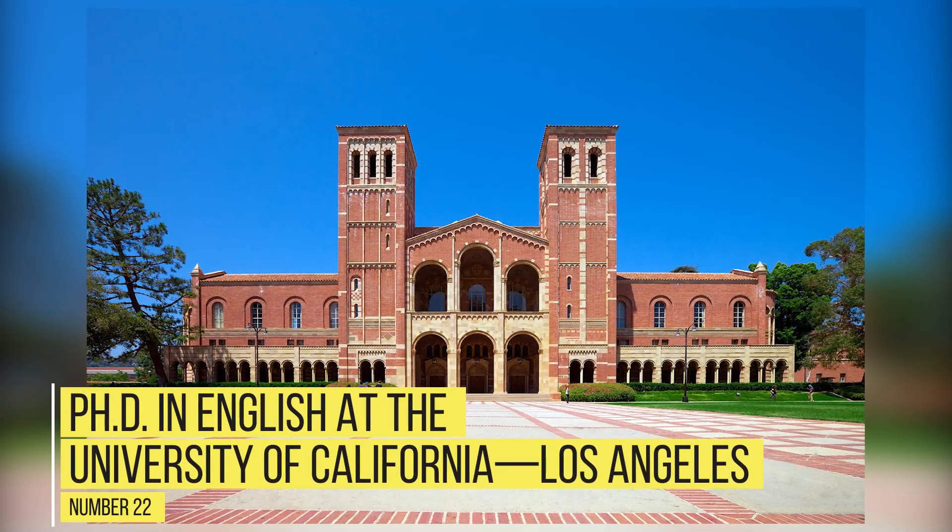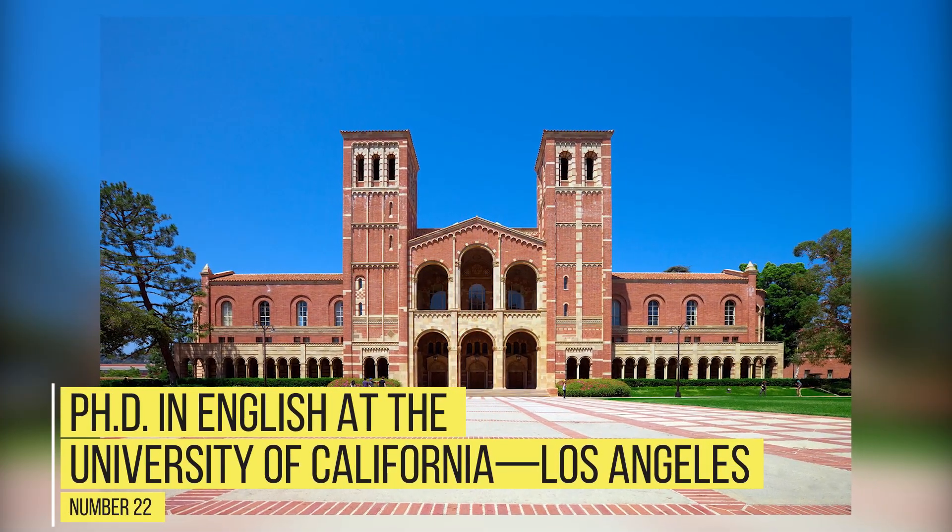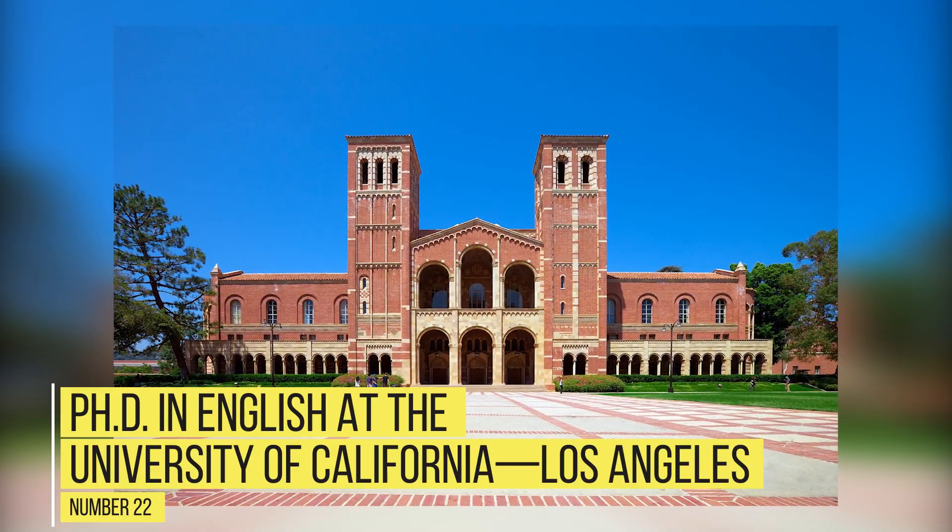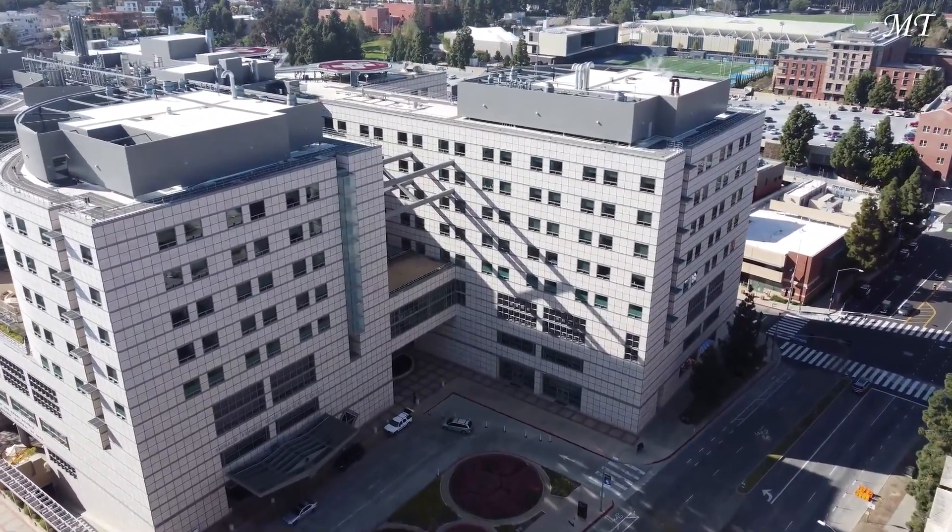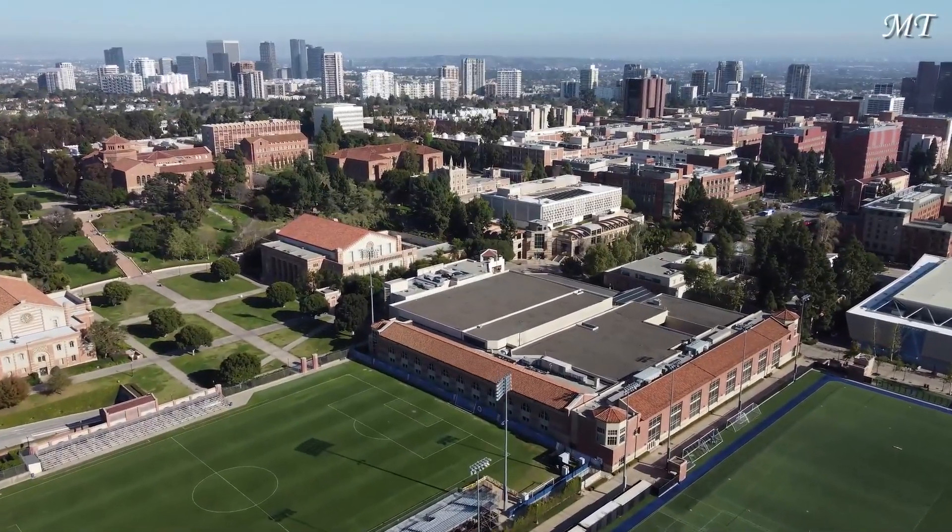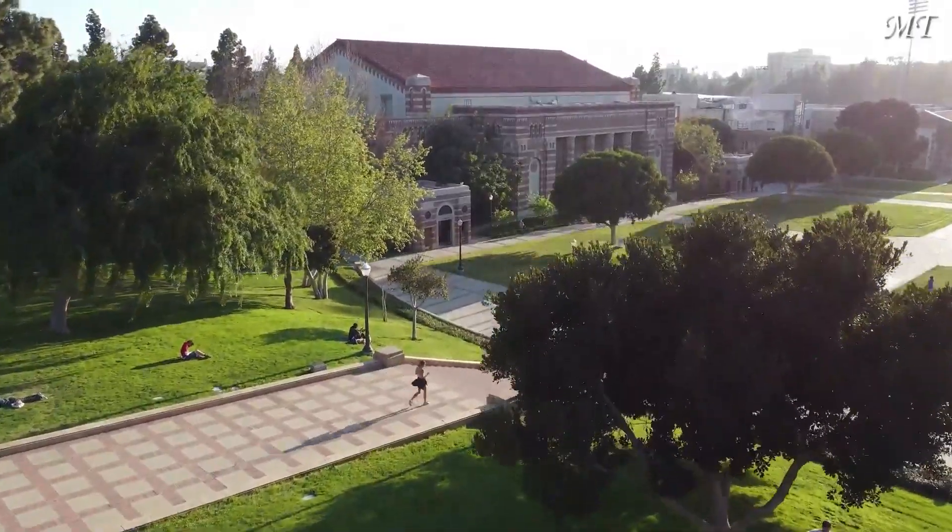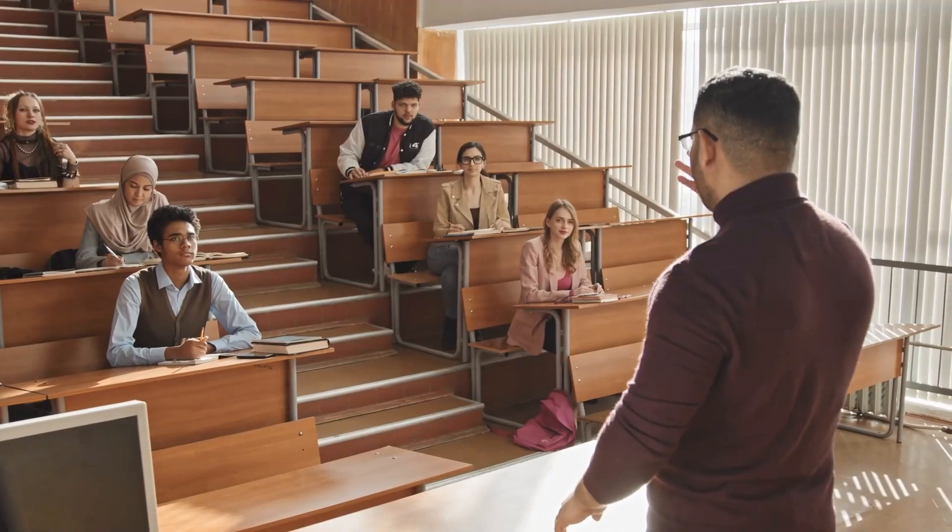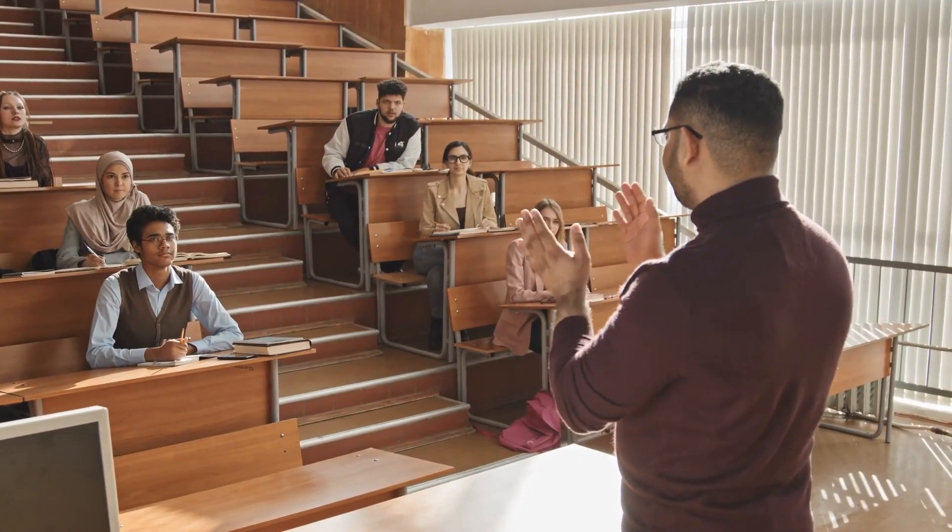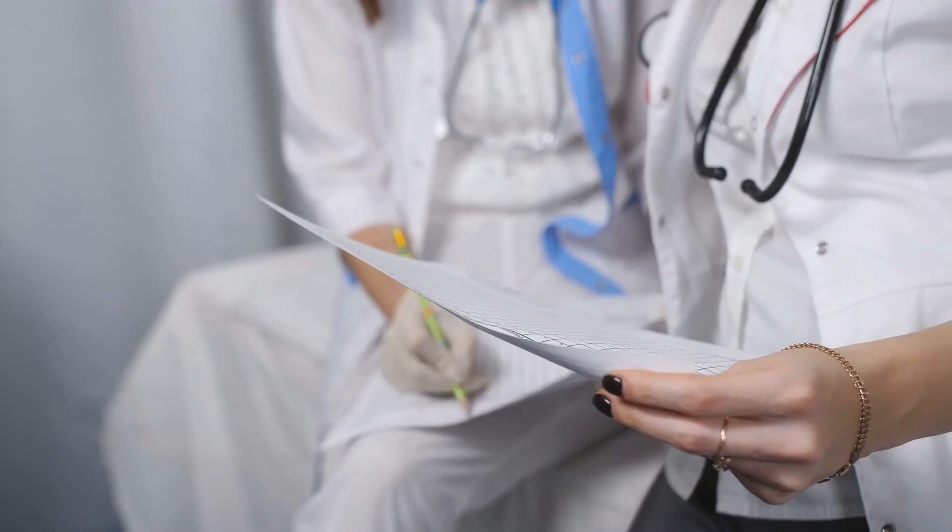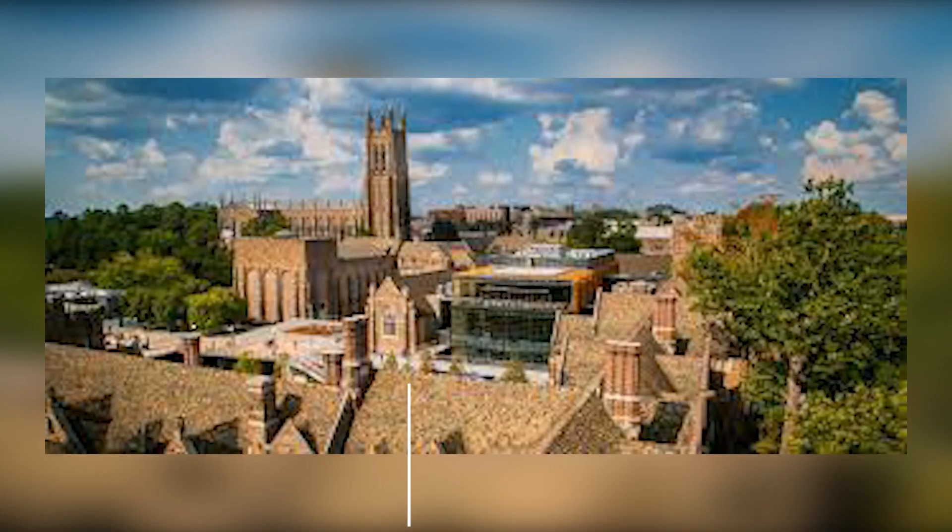Number 22: PhD in English at the University of California, Los Angeles. All entering students are offered a six-year funding package that includes a minimum of two years of full fellowship, four years of summer stipend support, and up to four years of teaching assistantships. Tuition, fees, and health insurance are included throughout.